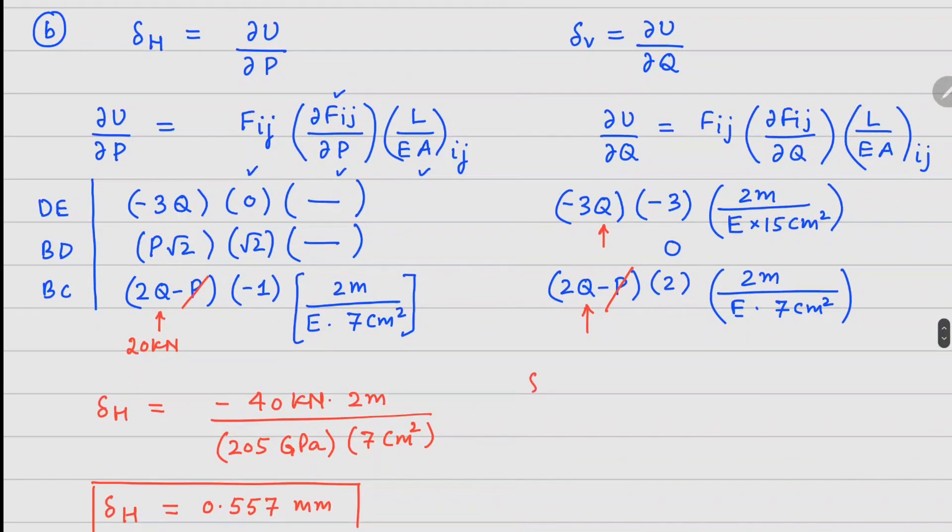Delta vertical is the summation of these two terms. I can take 2 meters divided by E common from both terms. Substituting Q equals 20, this becomes 180 kilonewtons on top and in the denominator we have 15 centimeter square.